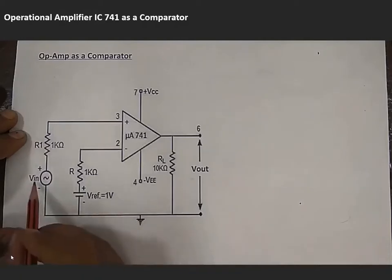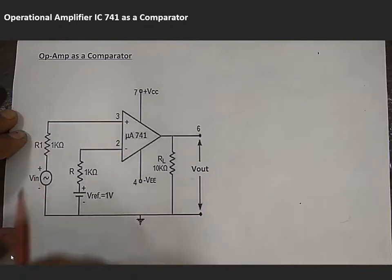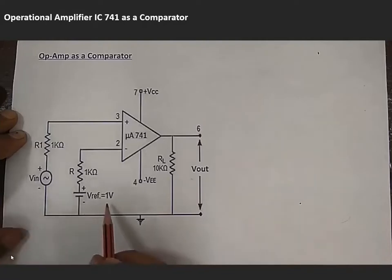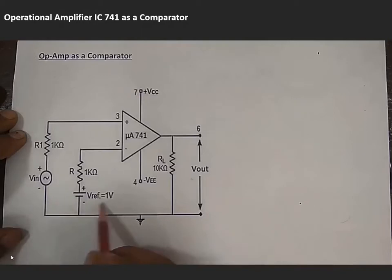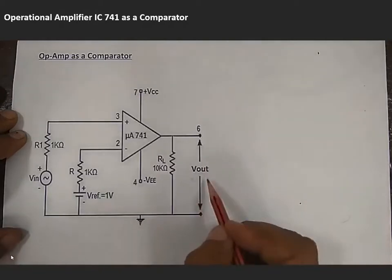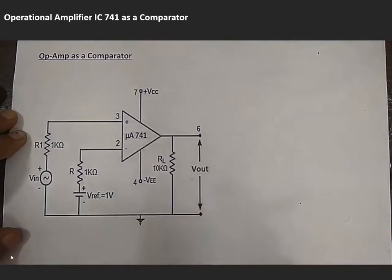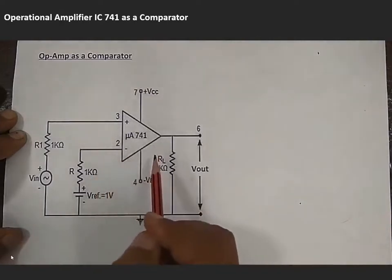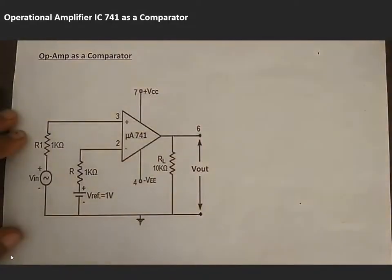If we apply Vin as 4 volt peak-to-peak, that means 2 volt Vmax. Since Vmax is more than 1 volt, output will appear. The output will be something like a square wave, because this is in open loop configuration. This is the experiment we will perform today.